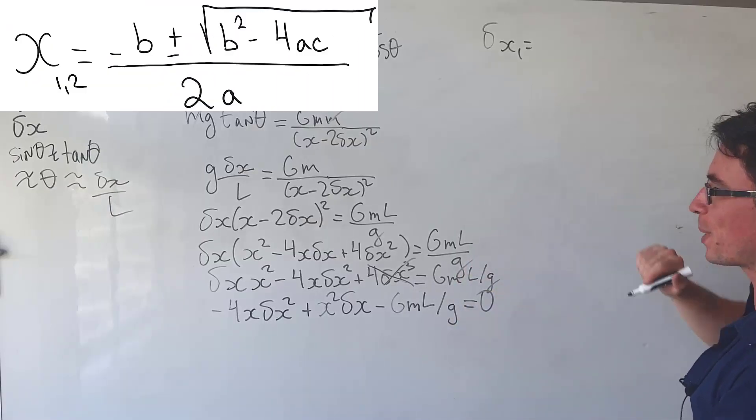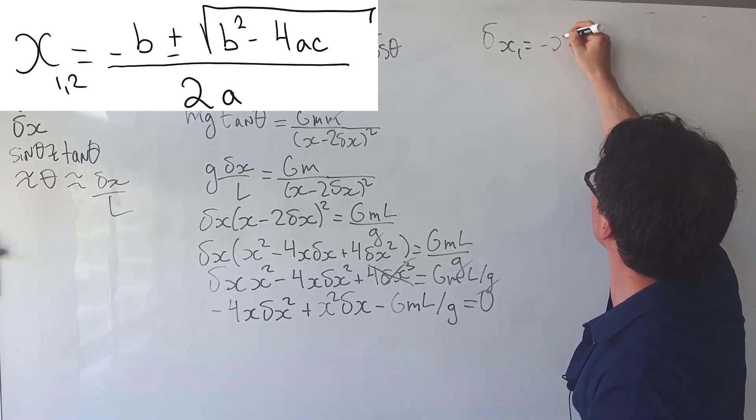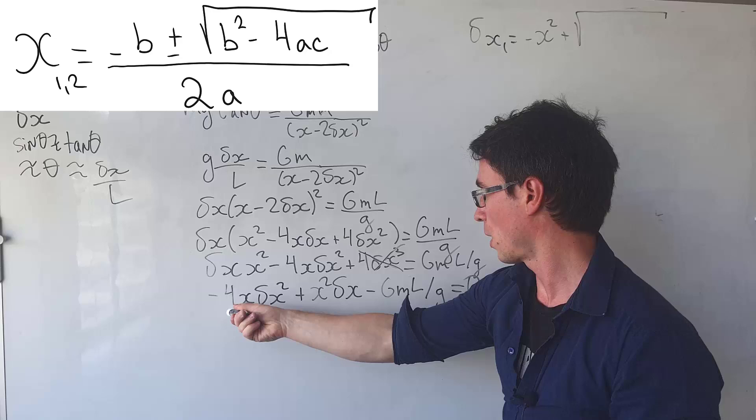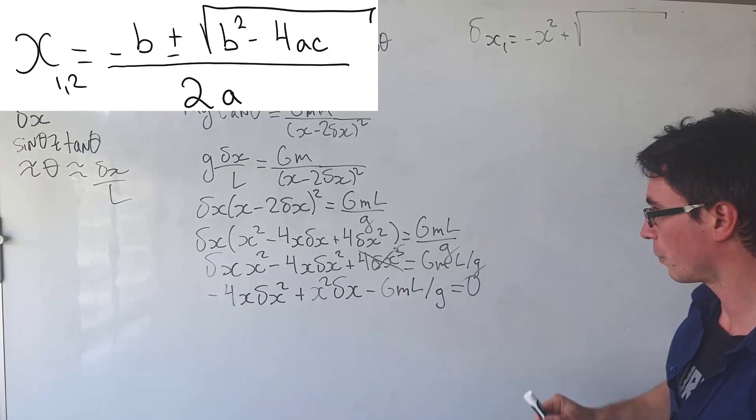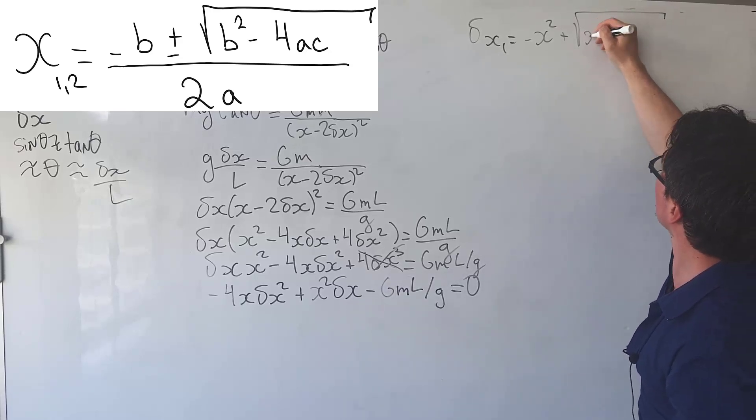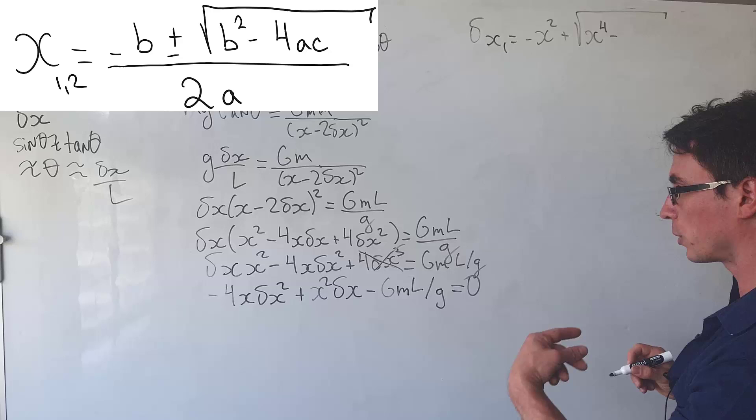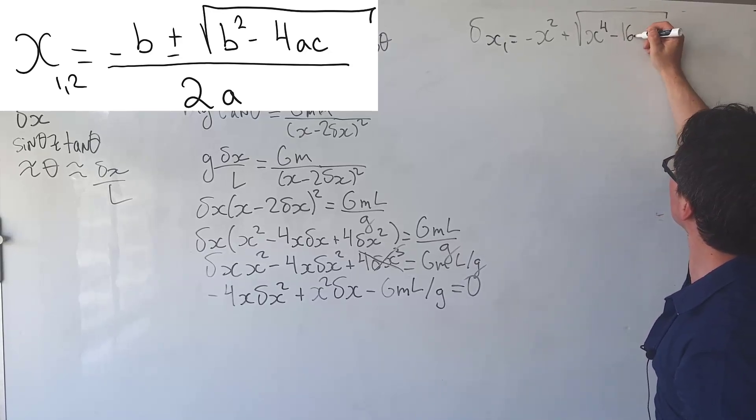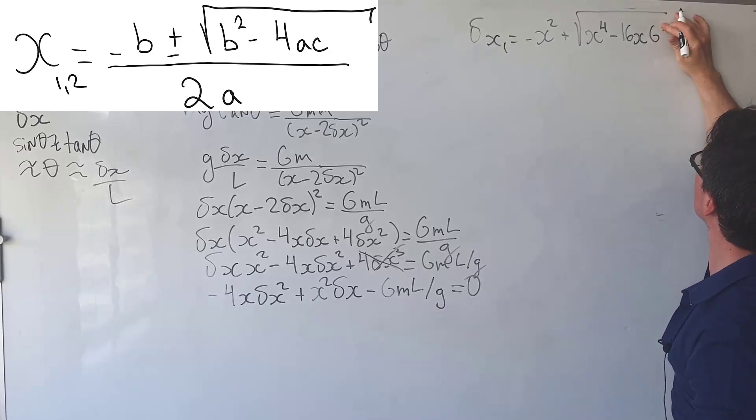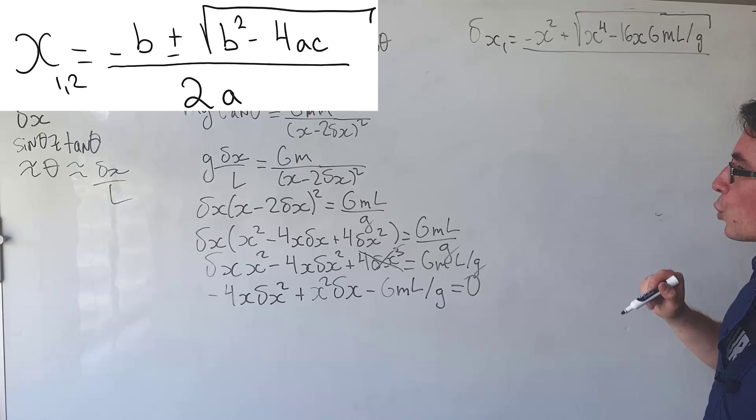Using the quadratic formula, our first root will just be equal to minus b, which is going to be just minus x squared plus the square root of b squared minus 4ac. So it's going to be this multiplied by this, which means that those two multiply will give us a positive answer. So the negative will remain. So b squared is going to be x to the power of 4. We're going to take away 4 times 4, which is going to be just 16x multiplied by gml over g divided by 2a, which in this case is just going to be negative 8x.